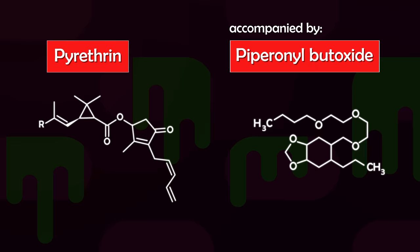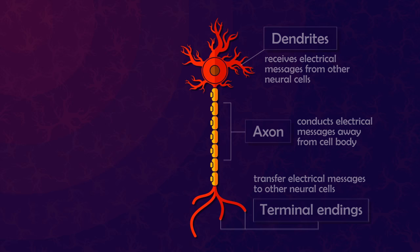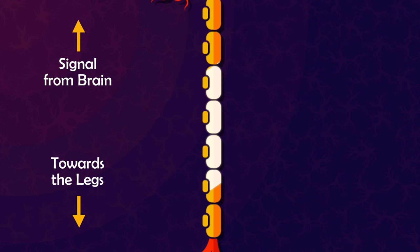To understand why these compounds are toxic to Joey, you need to understand how neurons normally function. Suppose Joey's brain asks his legs to start scurrying around in order to freak out some humans. This message would travel as an impulse of positive ions from his brain to the legs via axons and the many neurons along the path.